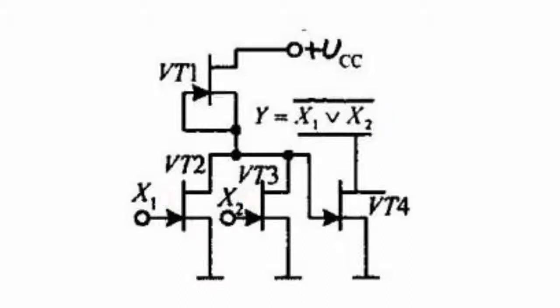If high-level voltage is applied to one or both the inputs, the corresponding transistor is open. The level at the output equals that of the logical zero.